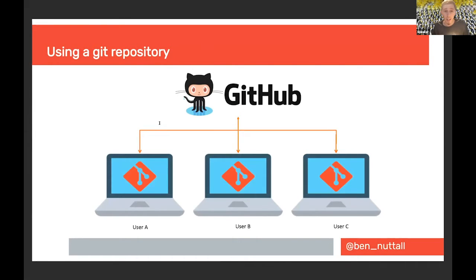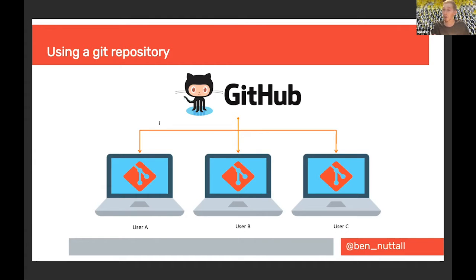Using a Git repository is a really good start. A lot of times you start writing code on your own computer. What you would then do is create a repository on something like GitHub, push it to GitHub, and then it's shared with the world. Another way is to create your repository on GitHub, clone the empty repository onto your machine, and then start working on your code straight away, pushing changes back to GitHub.